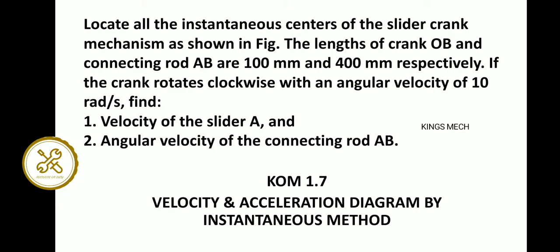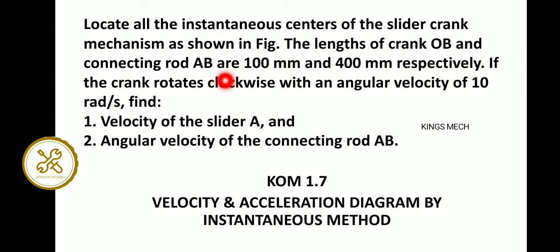Welcome to model number 1.7. Velocity and acceleration diagram by instantaneous method is the second model on a slider crank mechanism. Look at all the instantaneous centers of the slider crank mechanism as shown in the figure. The length of crank OB and connecting rod OD are 100 mm and 400 mm respectively. If the crank rotates clockwise with angular velocity of 10 radians per second, find the velocity of slider A and angular velocity of the connecting rod AB.